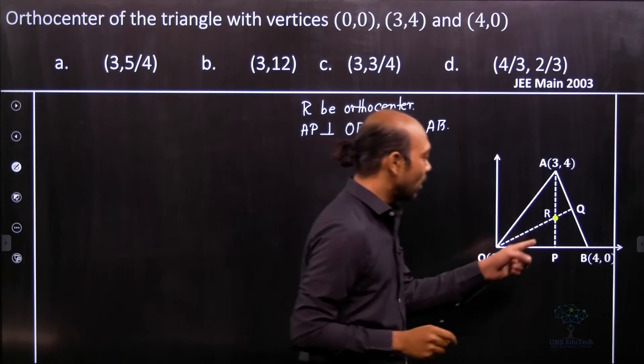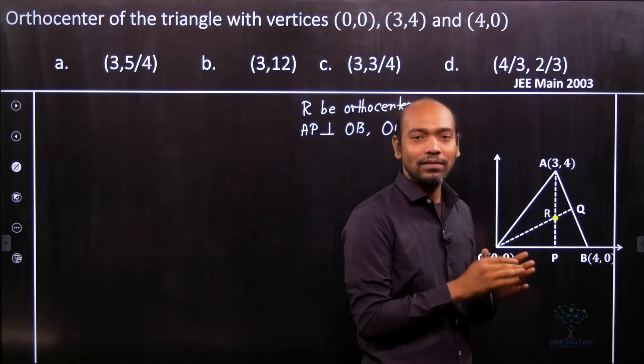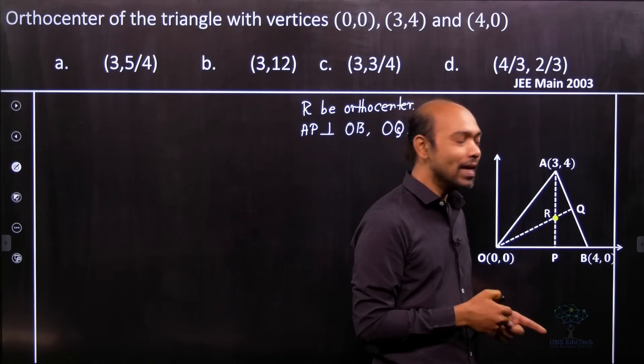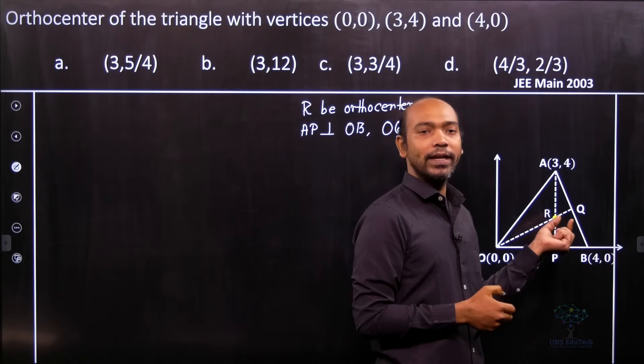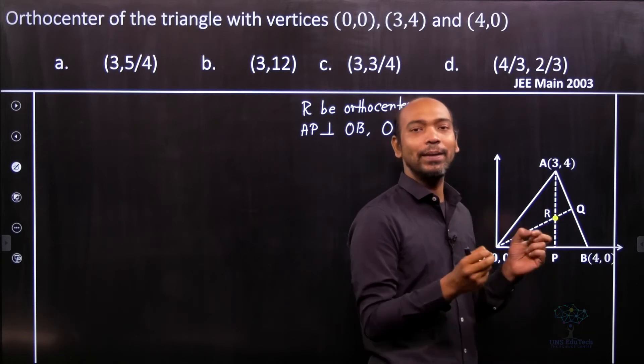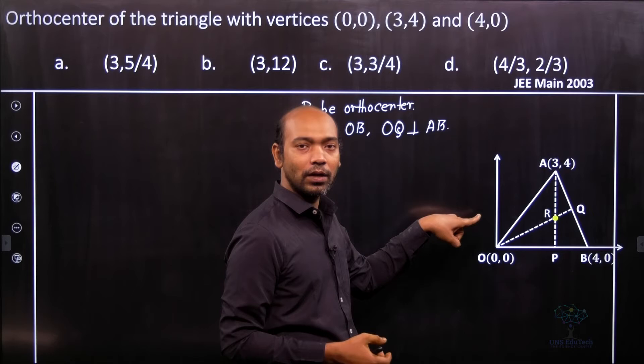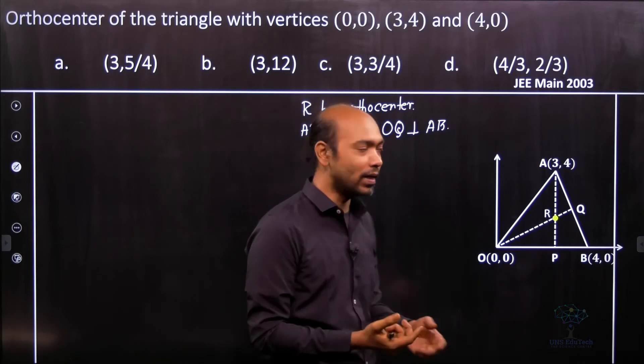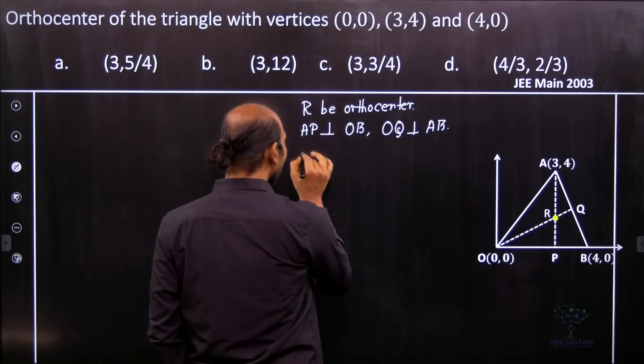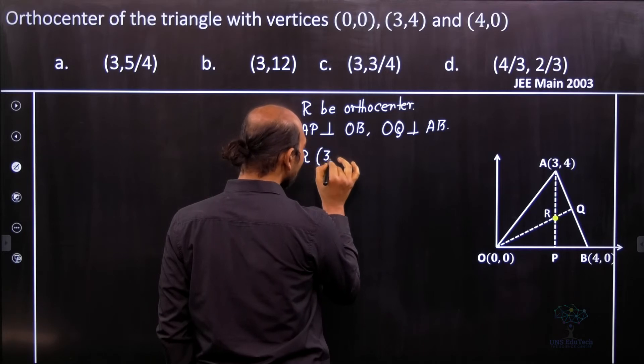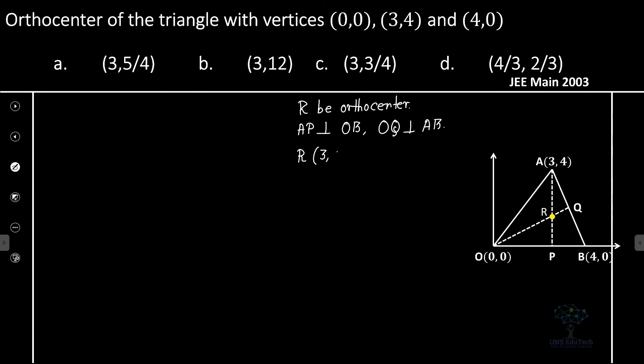Now see that as A coordinate is 3,4, and R lies on the same line AP, so therefore the x-coordinate for R is definitely 3. That's the definition. If I drop a perpendicular to the x-axis we'll get the x-coordinate. So therefore we consider the coordinate of R is actually 3, y. That's fine. So we assume that coordinate of R.